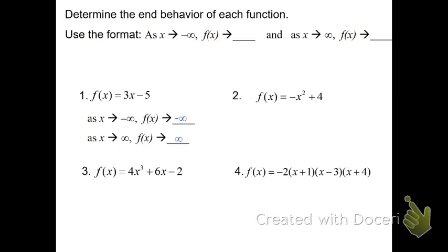Hopefully you've had a chance to work out these problems. On number 2 we have an even degree, but a negative leading coefficient. The even degree tells me they're both going the same direction. The negative leading coefficient tells me they're both going down. So as x goes to negative infinity, f of x is approaching negative infinity. And as x moves towards positive infinity, f of x is still going towards negative infinity — even degree, negative leading coefficient, both going towards negative infinity.